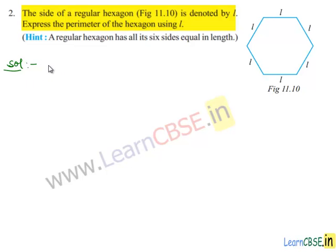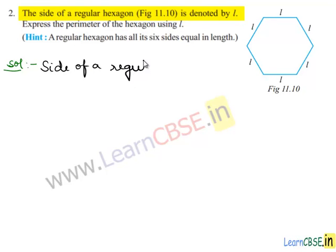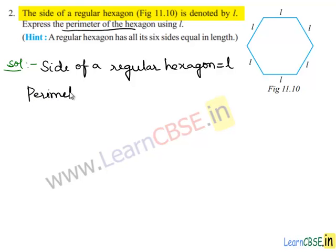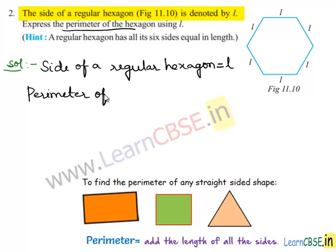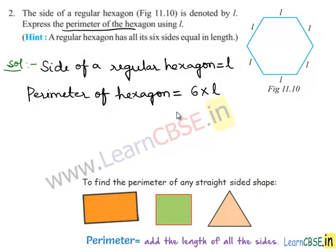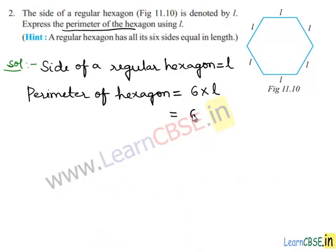In the question they had given us the side of a regular hexagon is equal to L. They have asked us to find out the perimeter of the hexagon. So the perimeter of the hexagon equals, since in a regular hexagon all its six sides are equal in length, it has six sides: 6 into L, which is equal to 6L.